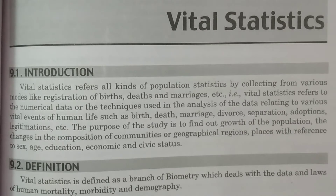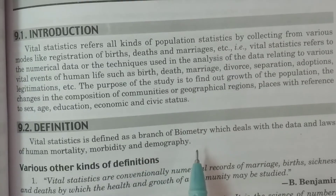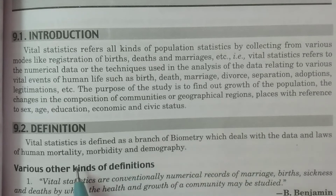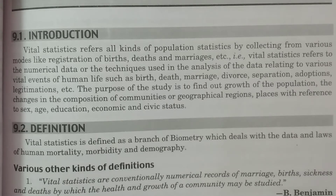What is the definition of Vital Statistics? Vital Statistics is defined as a branch of biometry which deals with the data and laws of human mortality, morbidity and demography. That is various kinds of births, deaths, legitimacy, marriages, etc. — these human activities and vital events all come under Vital Statistics.